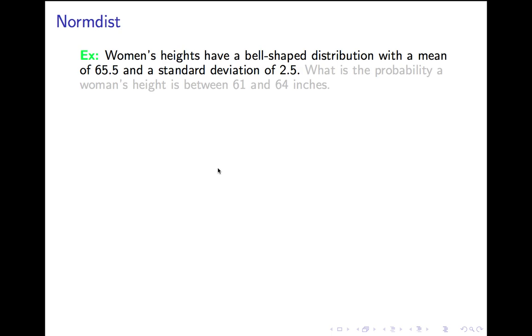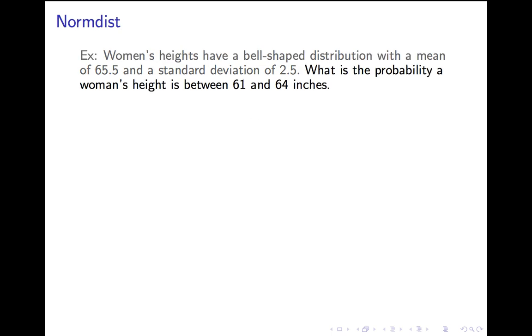Women's heights have a bell-shaped distribution with a mean of 65.5 and a standard deviation of 2.5. What's the probability a woman's height will be between 61 and 64 inches? That's a typical normdist question. The first sentence tells you a variable. It tells you that it's bell-shaped, or it might tell you that it's symmetric and unimodal, or roughly bell-shaped, anything like that, to indicate you can use the normal distribution. And it should tell you a mean and a standard deviation. Then it asks for a probability.